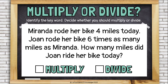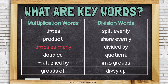Let's see if we can find some keywords in this word problem. Miranda rode her bike 4 miles today. Joan rode her bike 6 times as many miles as Miranda. How many miles did Joan ride her bike today? I see the keywords 'times as many' — that, to me, means that I should multiply.